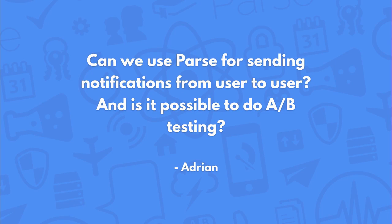Can we use Parse for sending notifications from user to user? And is it possible to do A/B testing? You can actually do both of these. For A/B testing, we have a part of the push composer where you can set it up. For the user stuff, you need to associate the installation object — which is what gets saved when you're targeting push notifications — with the actual user. Then when you're writing a push query, you can use the user to say, I want to send a push to an installation matched by this user. For A/B testing in the composer, you can send an A version and a B version to a sample set, look at the results, and then choose to send the winner to the rest of the audience.